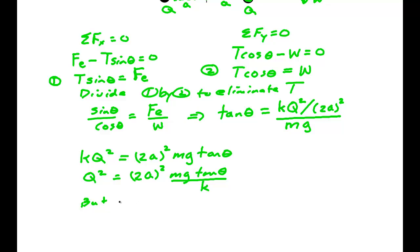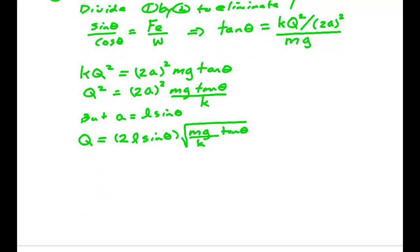But A is L sine theta. So if I put that in and take the square root, I get 2L sine theta times the square root of MG over K times the tan of theta. I have everything I need now. I just need to do some plugging some numbers in. By the way, I did take the square root. So actually this could be plus or minus. Either one would work. Negative charges would both repel each other. Positive charges would both repel each other. So all it says is can I find the magnitude. It does not ask me what the specific charge is. So I'm just going to give them a magnitude, a positive number at the end.